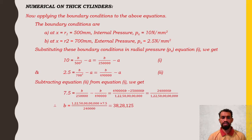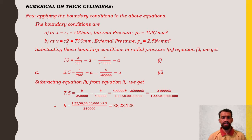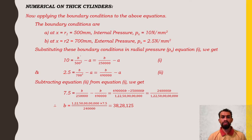Applying boundary conditions to the Lamé equations: px = B/x² − A. At x = r1 = 500 mm (internal radius), px = 10 N/mm². At x = r2 = 700 mm (external radius), px = 2.5 N/mm². Substituting these boundary conditions in the radial pressure equation, we get: 10 = B/500² − A, which is equation 1.